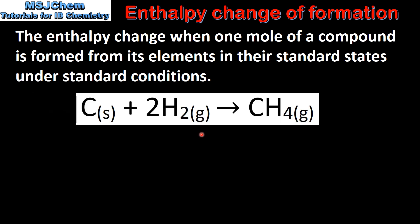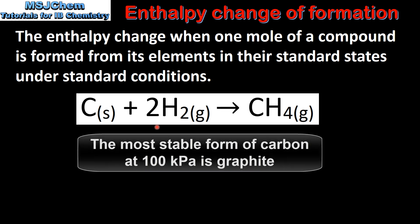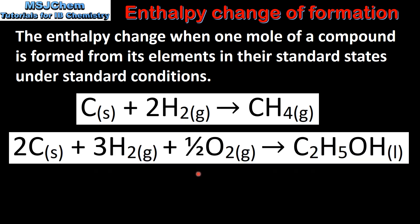Here we have the equation for the formation of one mole of methane gas from its elements in their standard states. In their standard states, carbon is a solid and hydrogen is a diatomic gas. The second equation shows the formation of one mole of ethanol from its elements in their standard states. Once again, the standard state of carbon is a solid and hydrogen and oxygen are diatomic gases.